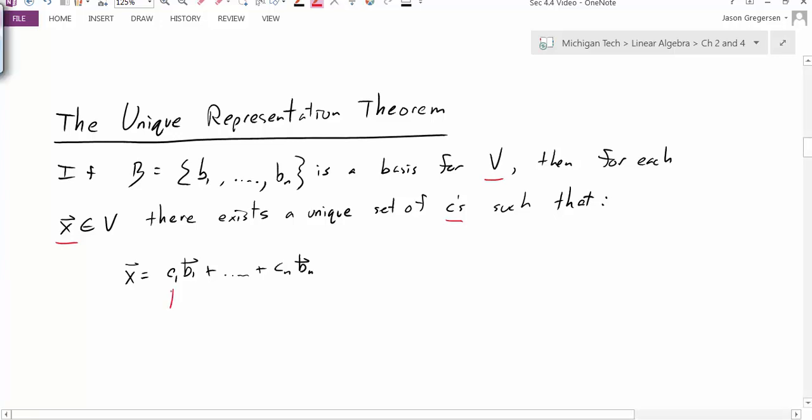So because there is only one value for each of these constants that makes this statement true, we can really identify this x vector with its constants. And so we will say that the coordinates of our vector x with respect to this basis beta will be equal to a list of these constants. And so this is the coordinate vector, the coordinate vector of x relative to b. So this is our definition of coordinates.